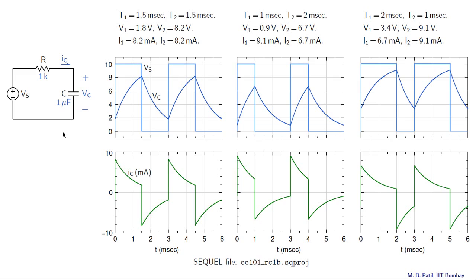We will simulate this RC circuit which we have seen earlier. It is a simple series RC circuit with R equal to 1k, C equal to 1 micro, and Vs is a square wave voltage going from zero volts to ten volts. The interval in which Vs is high is called T1 and the interval in which Vs is low is called T2. We will start from the beginning and see how this circuit schematic can be constructed, how we can specify the simulation parameters such as the time step, how we can specify the output file, and finally how we can observe the plots. Once we set up this simulation project, we can change the values of T1, T2, R, C, and look at the results.